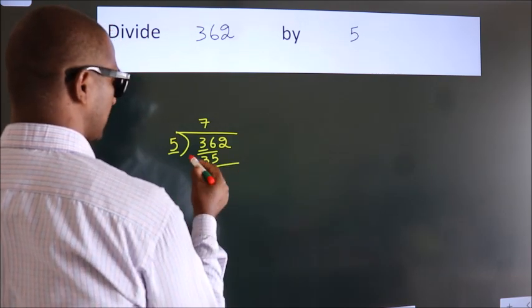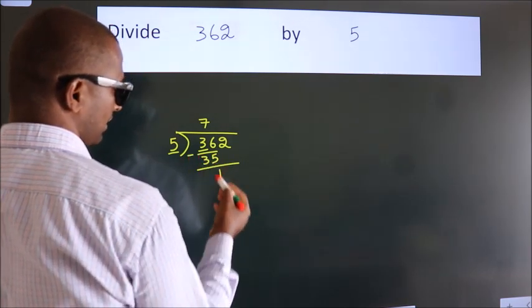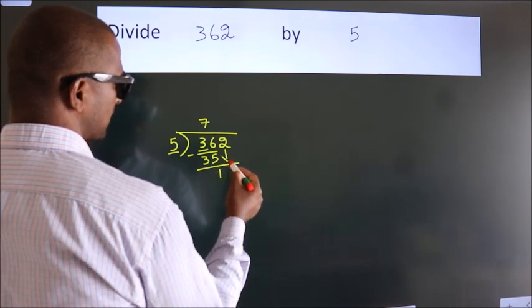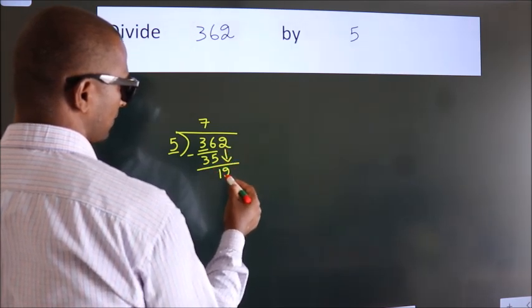Now we should subtract. We get 1. After this bring down the beside number. So 2 down. So 12.